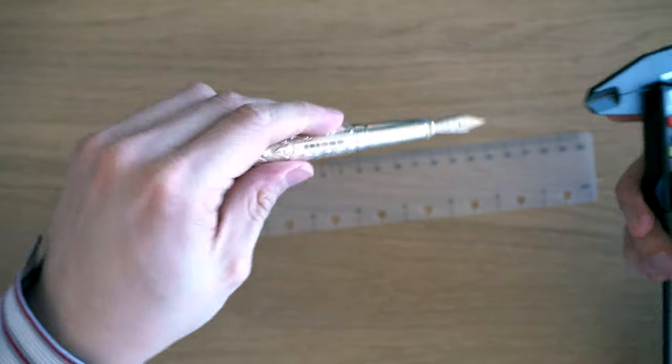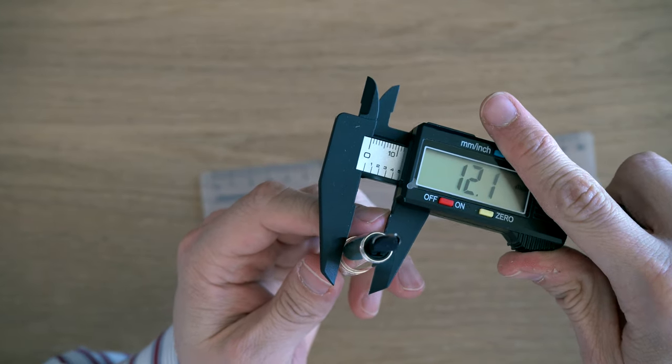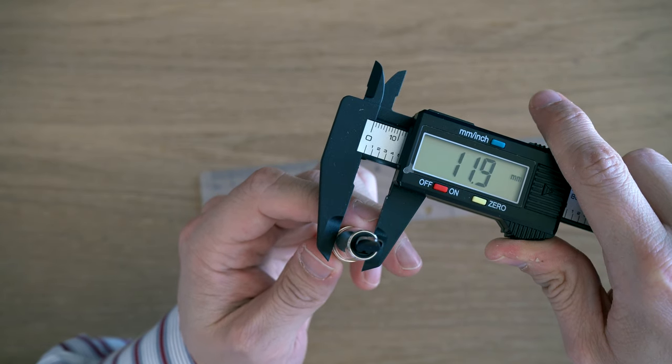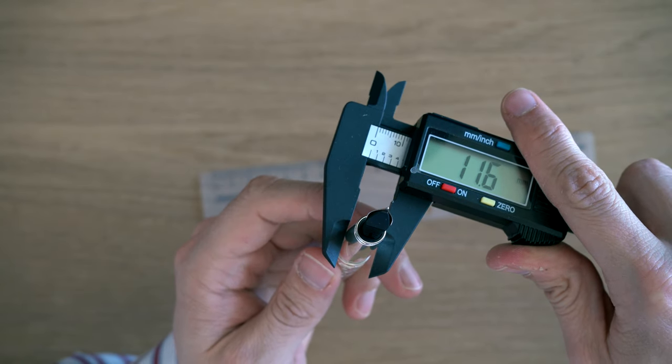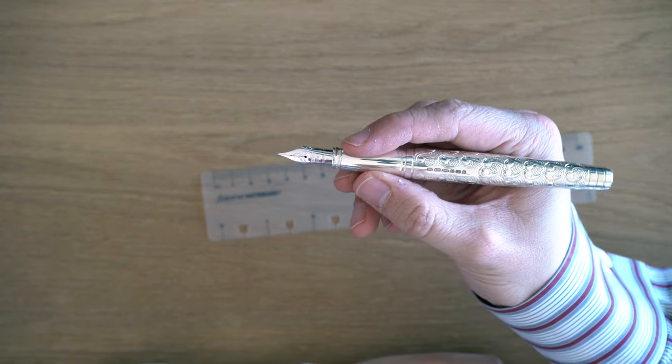Let's do the grip section. Now, this does obviously taper quite a bit, so I'll go for the kind of wider part of the top here, which is 12. That's 11.9, very wide. The very bottom is 10. And then kind of in the middle, we're looking 11.6. Very comfortable size grip section.